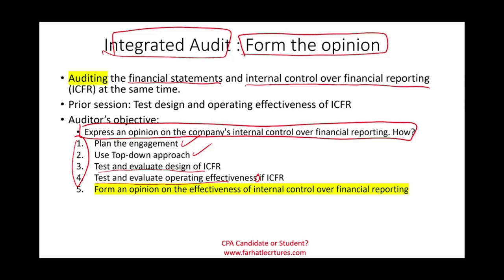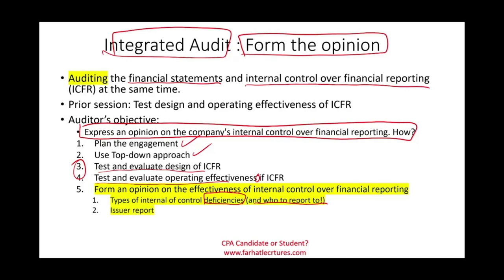For the opinion I'm going to break it down into three sub-lectures. First I'll discuss the types of internal control deficiencies, because when we performed steps three and four we could have found some deficiencies. We need to know what types of control deficiencies we can have and who we should report those deficiencies to. Then we'll look at the actual report — one section for the issuer, which is publicly traded, and one for the non-issuer.